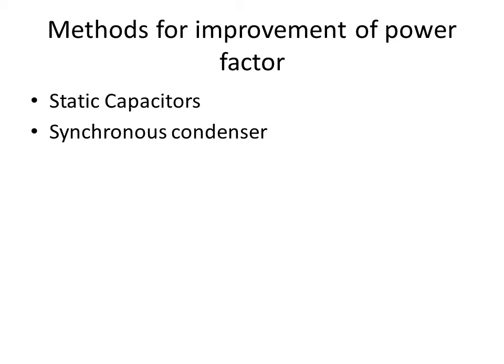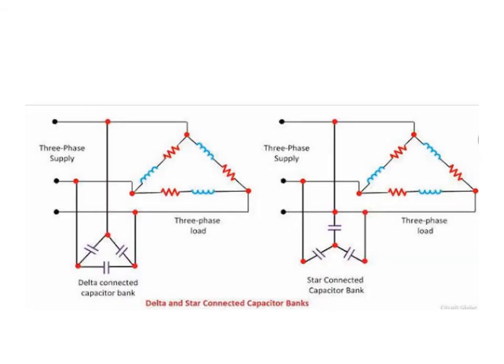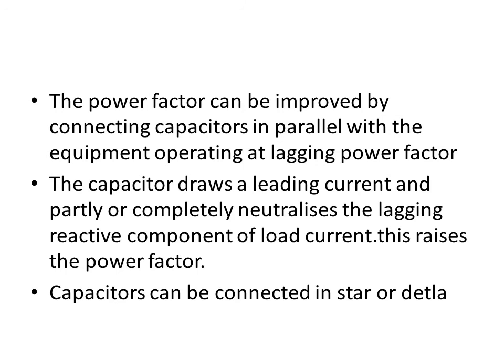These are some methods to improve power factor. The first is static capacitors and the second is a synchronous condenser. For a three-phase load, capacitor banks can be connected in delta or star configuration — the first diagram is for delta-connected and the second is for star-connected. Practically, they are connected in delta. Capacitors are connected in parallel with the equipment operating at lagging power factors. The capacitor draws a leading current which partly or completely neutralizes the lagging reactive component, thereby raising the power factor.